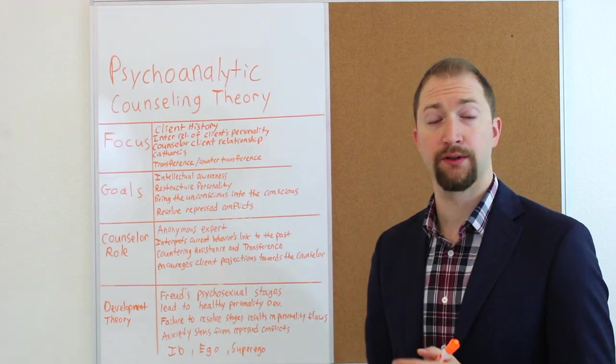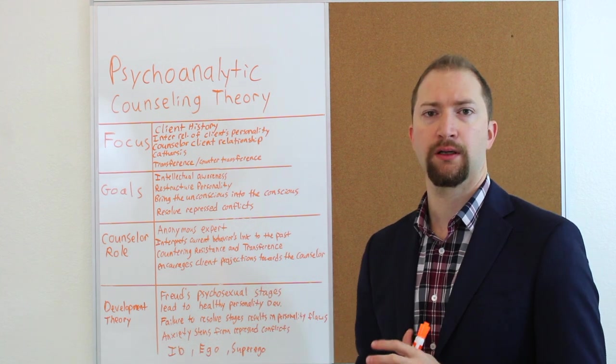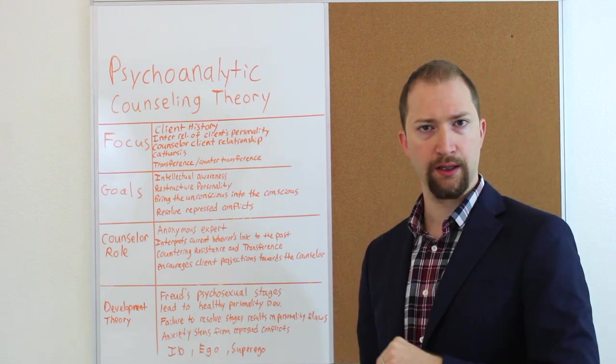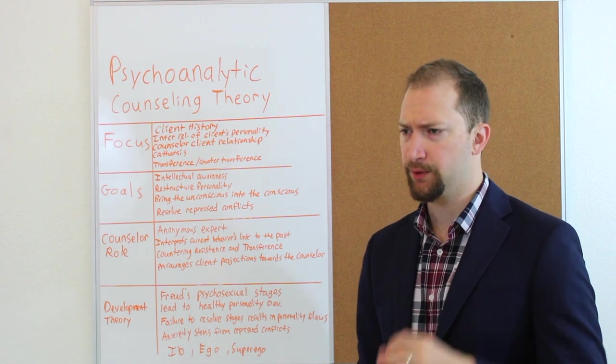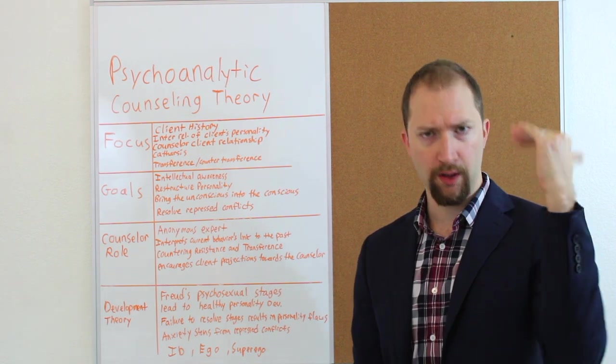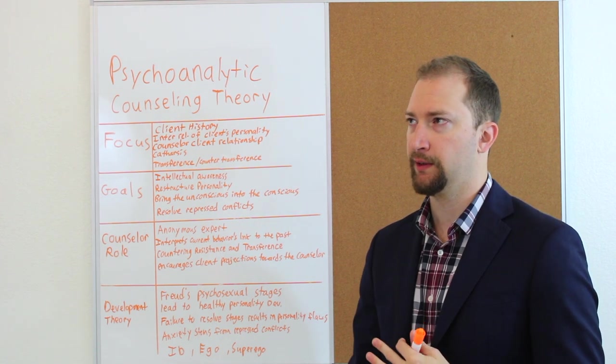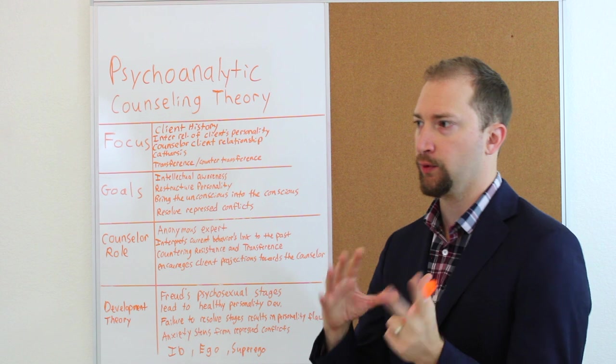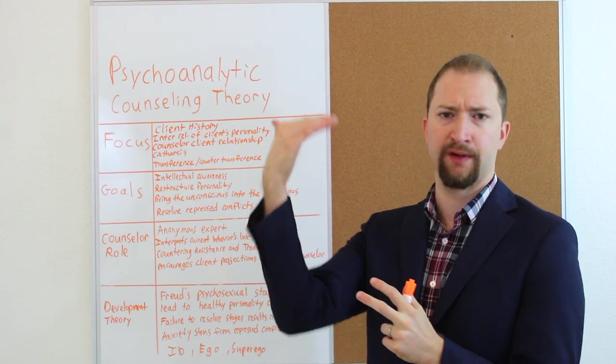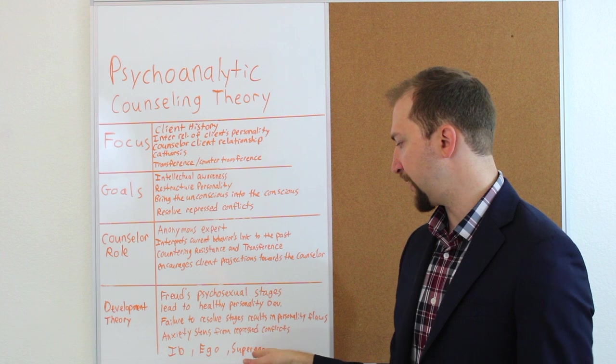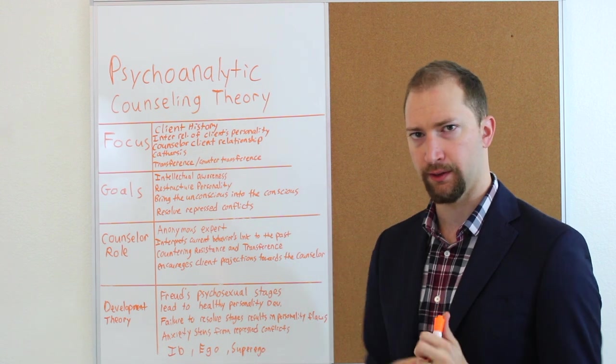Then we've got the superego, which is the opposite of the id. It's like higher sense of morality, ideals. It's about the principle, about honor, and this sense of values and morals and how that could be perfect or should be perfect. So it's based off principles and rules.